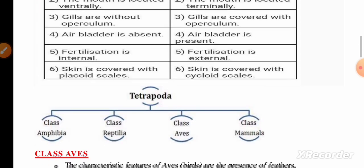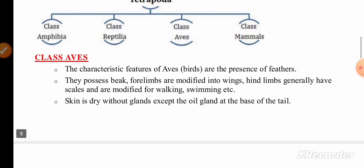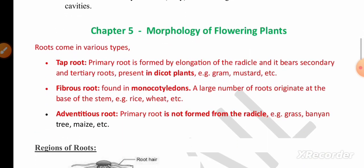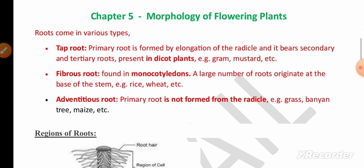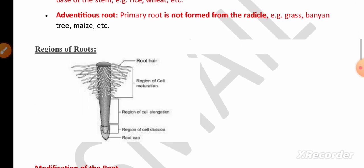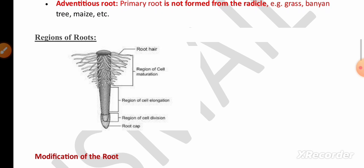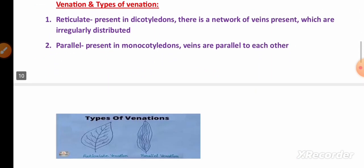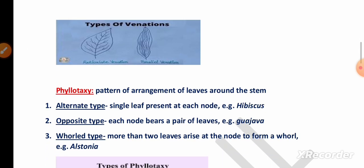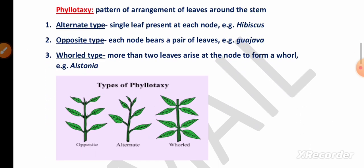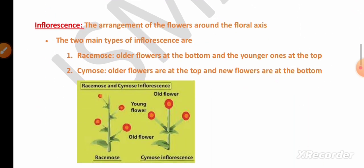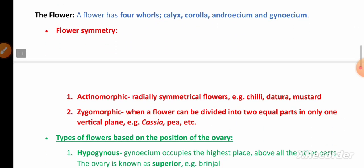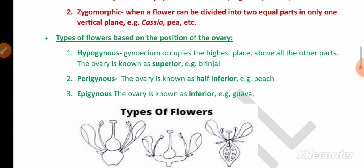Remember the difference between chordates and non-chordates, and the difference between Chondrichthyes and Osteichthyes — very important. Also remember the characteristic features of aves helpful for flight. In Morphology of Flowering Plants, remember the types of roots, regions of the root, modification of roots, venation and its types, phyllotaxy and its types.